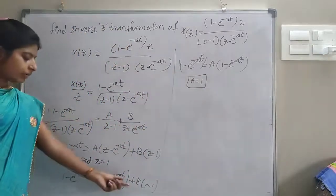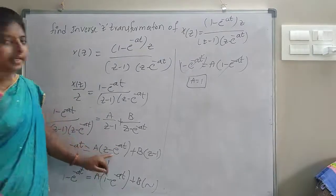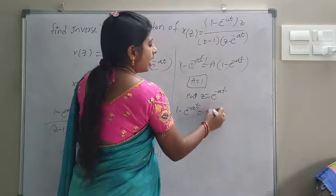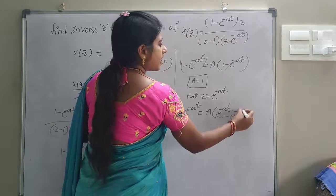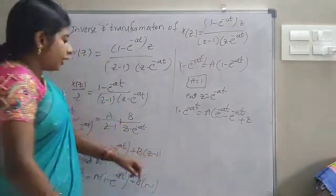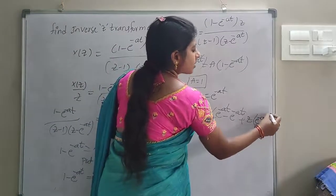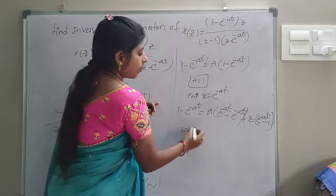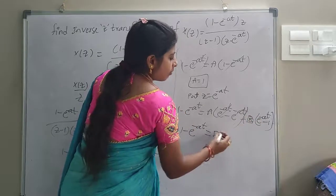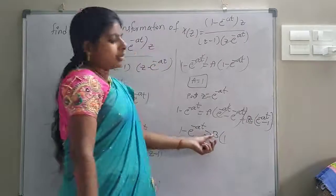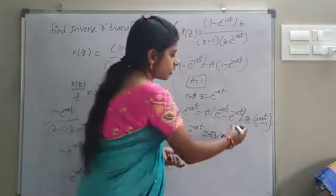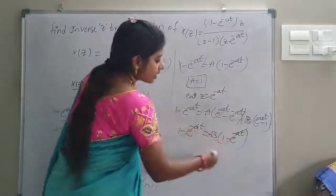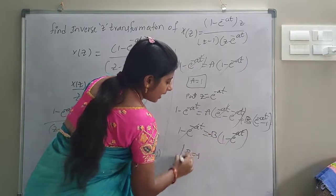Now we find the value of B. Put Z equal to e^(-AT). The term with A cancels to zero. So (1 minus e^(-AT)) equals B into (e^(-AT) minus 1), which equals B times minus(1 minus e^(-AT)). Cancelling (1 minus e^(-AT)) from both sides, therefore B equals minus 1.